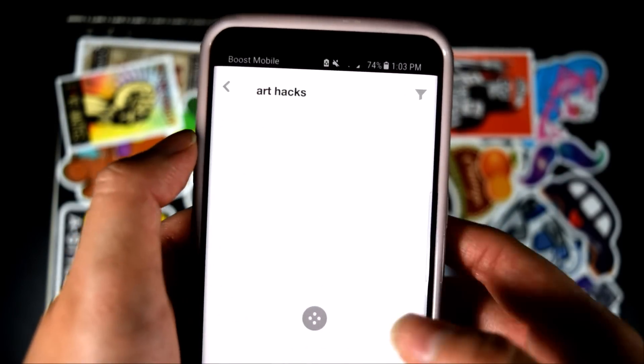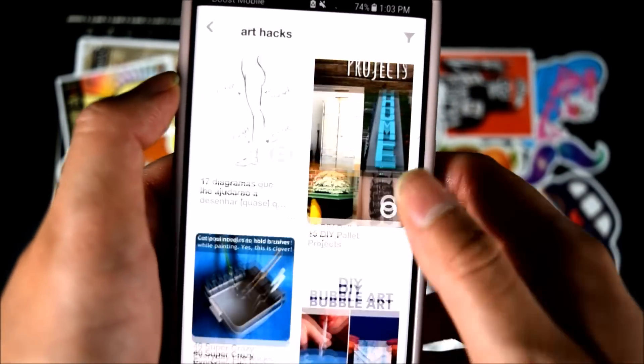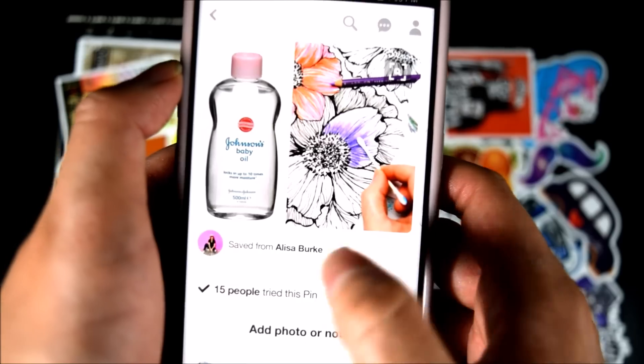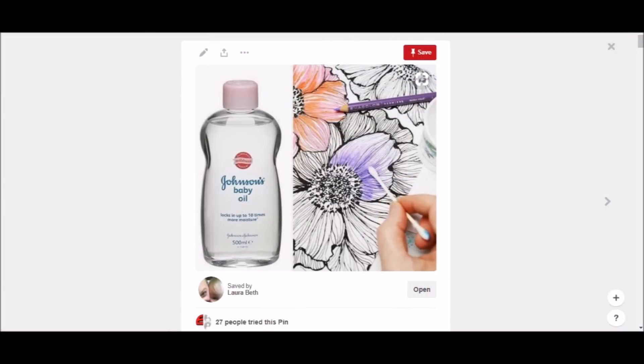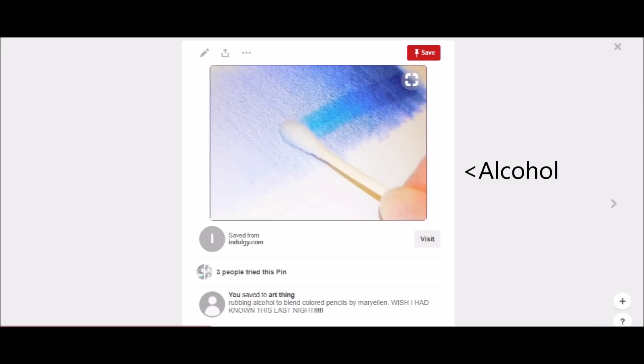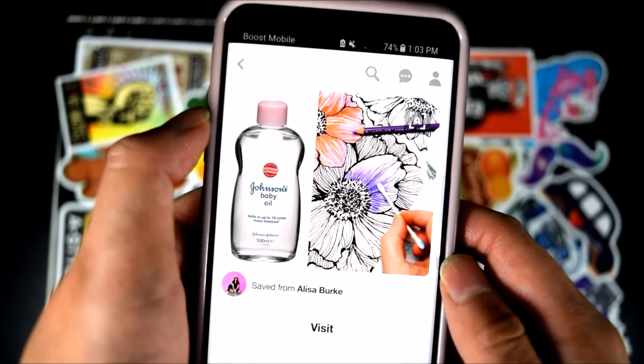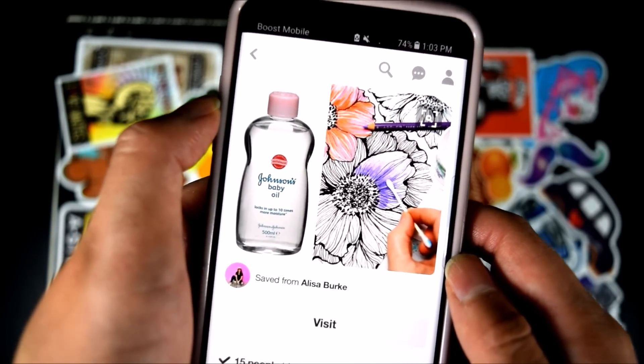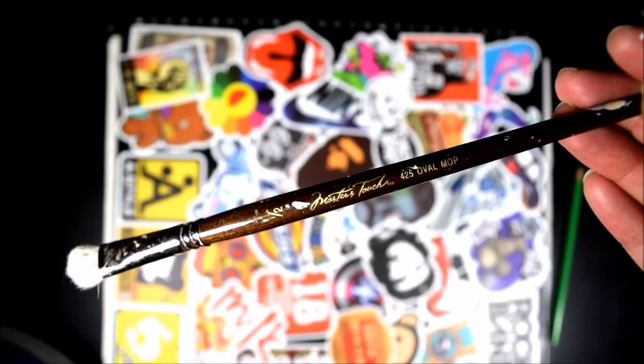So the other day I was looking through Pinterest for art hacks and I stumbled across something very interesting. Apparently there are liquids that you can use to break down your colored pencils to blend them better. This really blew my mind. And of course, I'm a sucker for anything blended. So today, ladies and gentlemen, we are going to try these out and see just how well it works.